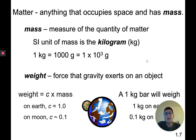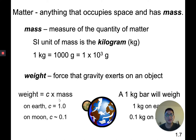Matter is anything that occupies space and has mass. Mass is the measure of quantity of matter. On Earth, weight and mass are about the same because weight equals gravitational force times mass, and on Earth that gravitational constant equals 1. So weight equals mass on Earth. In chemistry class we'll use them interchangeably, though technically mass is more accurate.